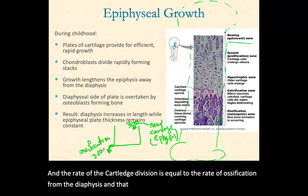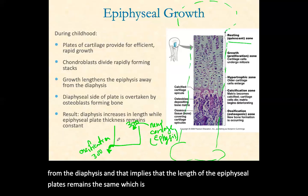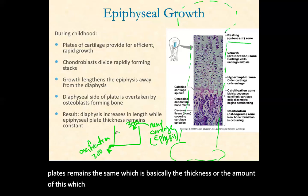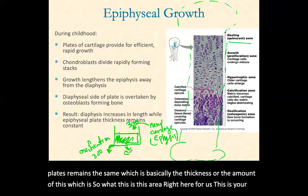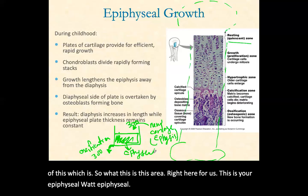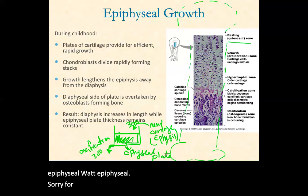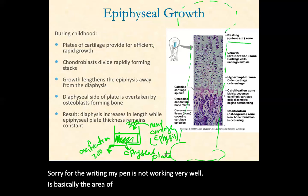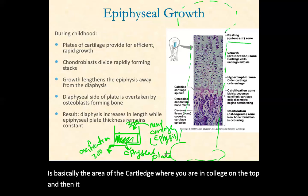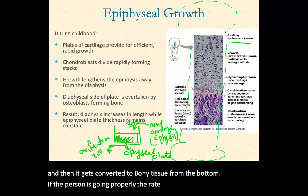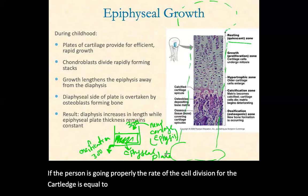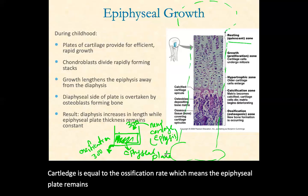That implies that the length of the epiphyseal plate remains the same — basically the thickness of this area right here. The epiphyseal plate is basically the area of cartilage where you're adding cartilage on the top, and then it gets converted to bony tissue from the bottom. If the person is growing properly, the rate of cell division for the cartilage is equal to the ossification rate, which means the epiphyseal plate remains the same size.